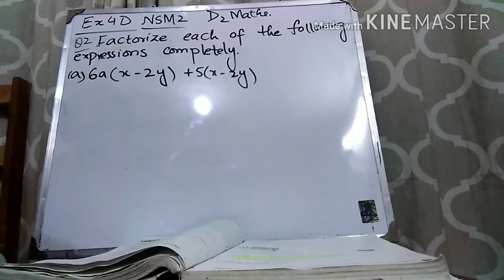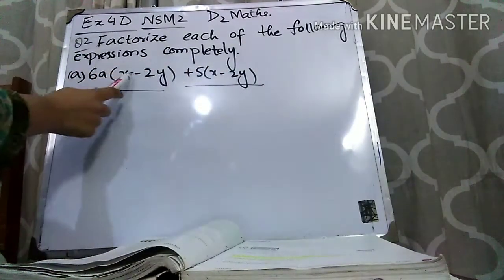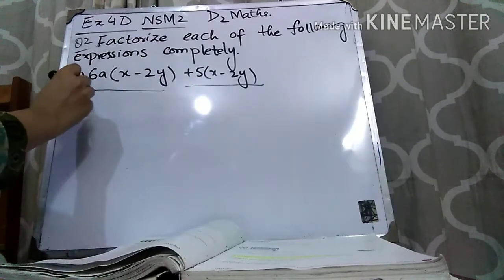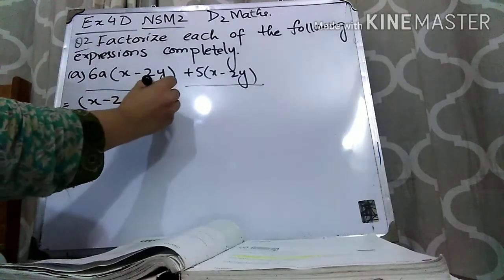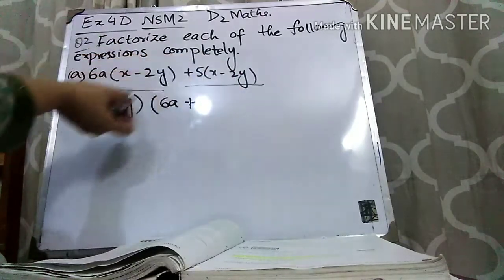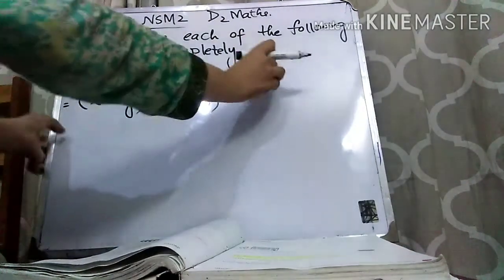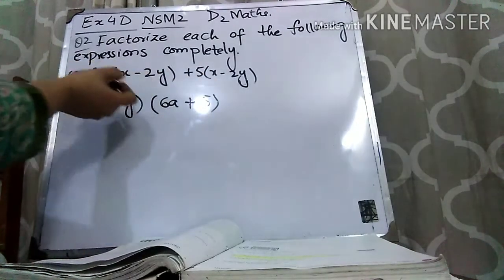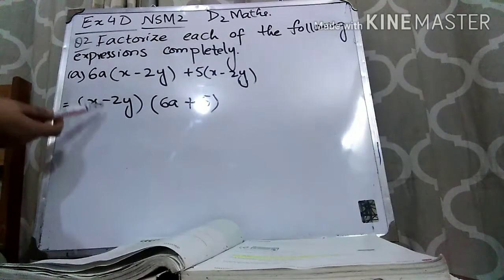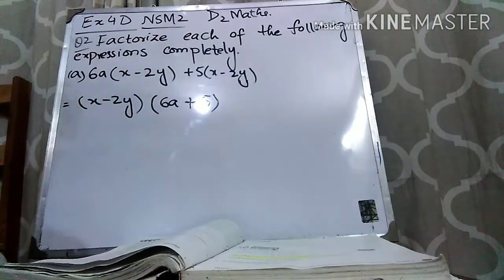Question 2, Part A: 6a(x − 2y) + 5(x − 2y). You can see that the bracket (x − 2y) is present in both terms, so (x − 2y) is common. Taking (x − 2y) common: from the first term 6a is left, and from the second term 5 is left. So the answer is (x − 2y)(6a + 5).